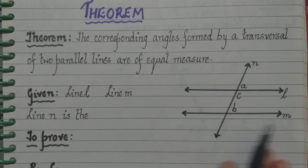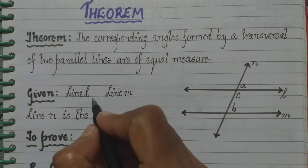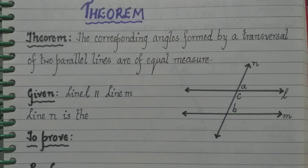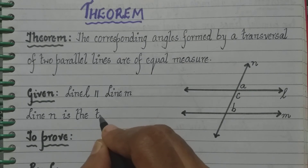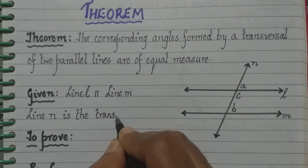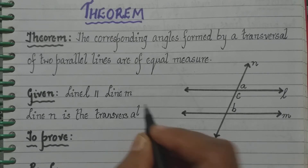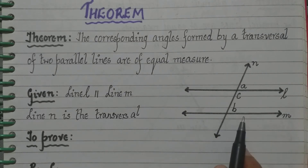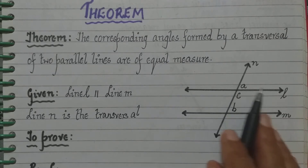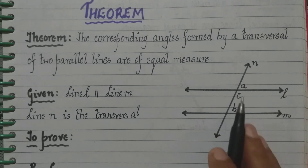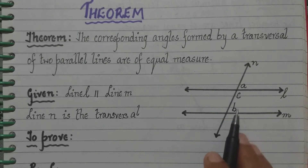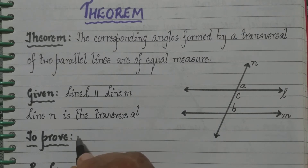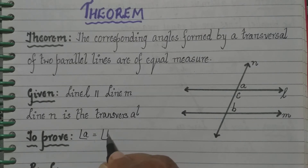Now which are the parallel lines given to us? They are line L and line M — line L is parallel to line M. That is what we have to write in 'given.' Line N is the transversal, so it is cutting these two lines, line L and line M. What have we to prove? That the corresponding angles so formed are of equal measure. The corresponding angles are angle A and angle B — both on the right side of the transversal and above the lines. Therefore we have to prove angle A is equal to angle B.